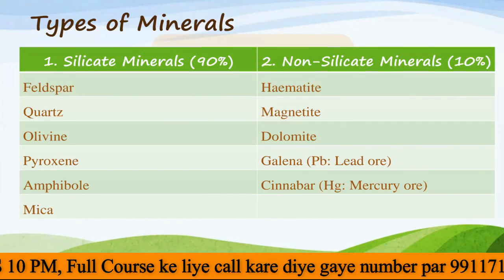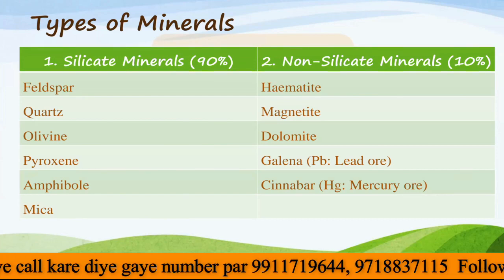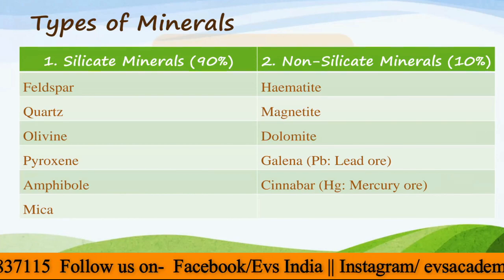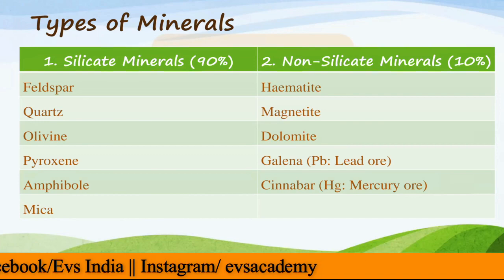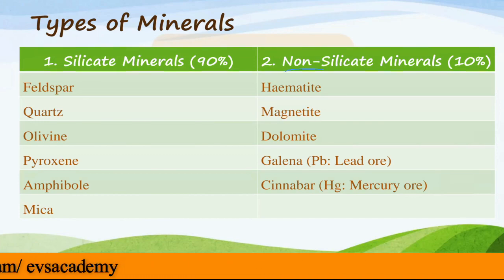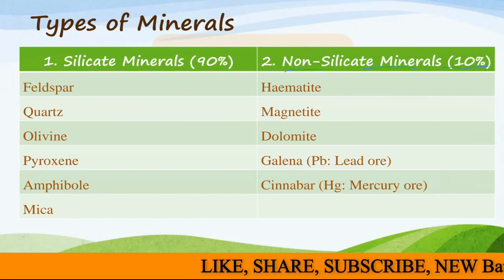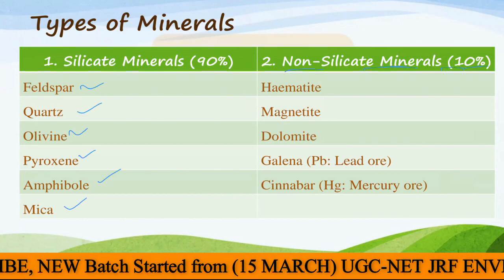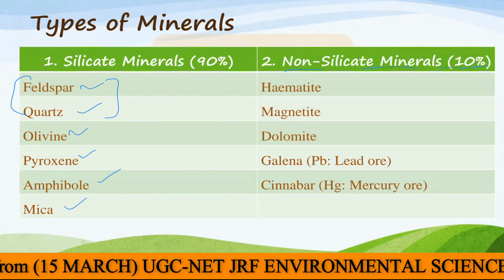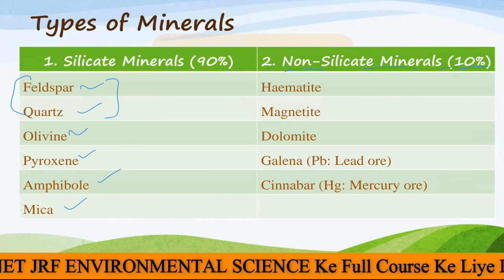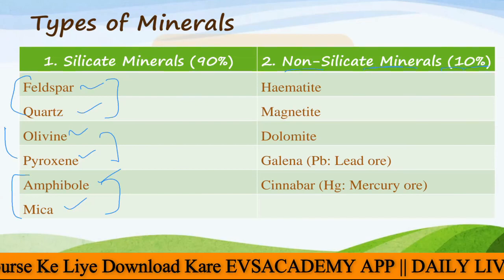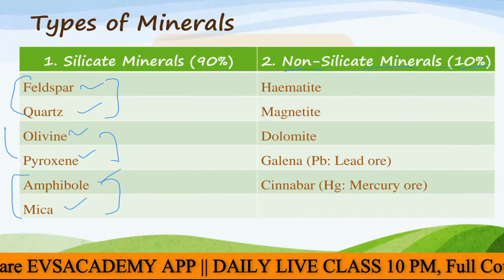All types of minerals are divided into two groups. The first group is silicate minerals, which make up 90% of all minerals. Then we have non-silicate minerals, contributing only 10%. Examples of silicate minerals include feldspar, quartz, olivine, pyroxene, amphibole, and mica. The first two — feldspar and quartz — are the most dominant types found in the earth's crust.